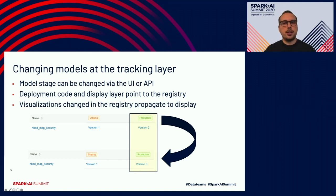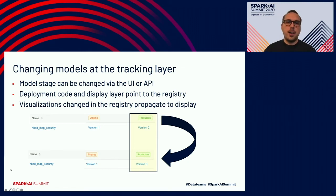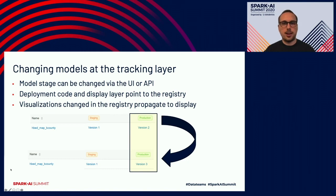We can go from production stage to version two of our model to version three, and all downstream systems will pick up on that change and display the current best visual representation. This is great because it has one point of control for updating these mappings and distributing them across the organization.